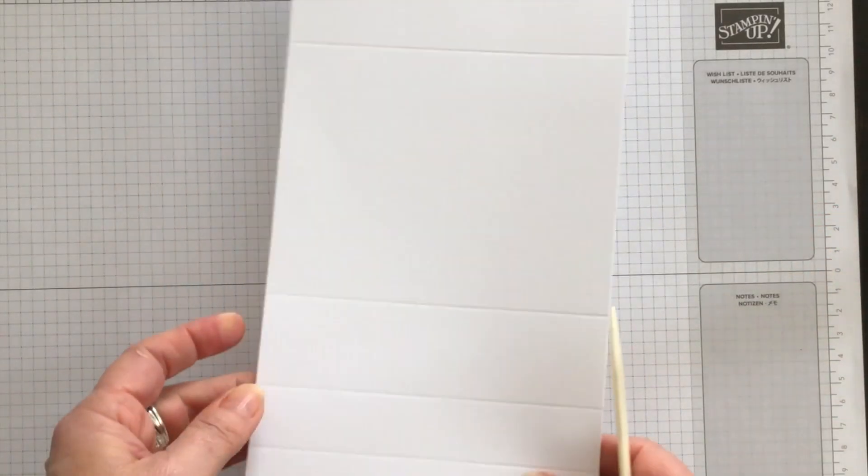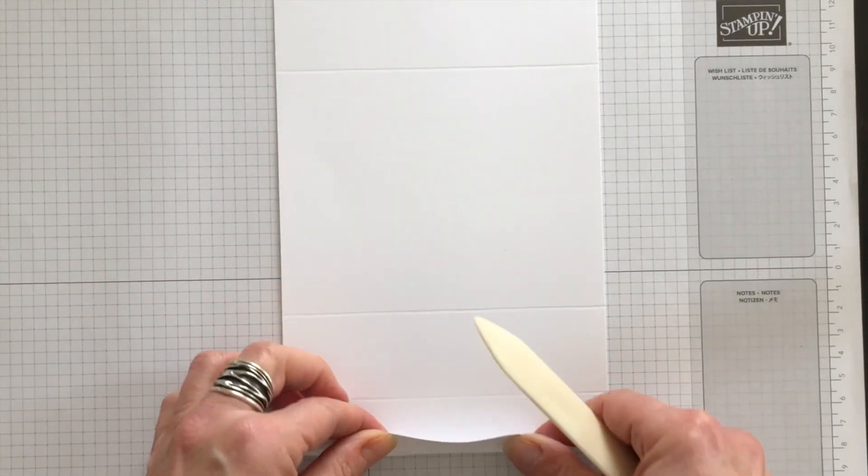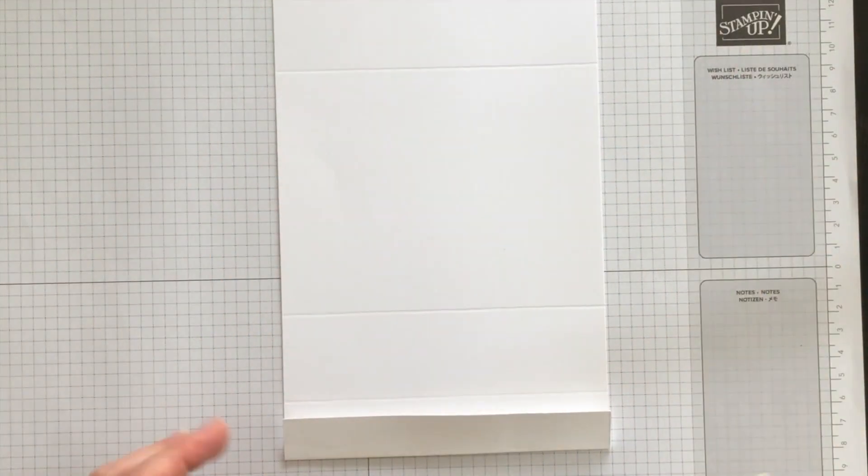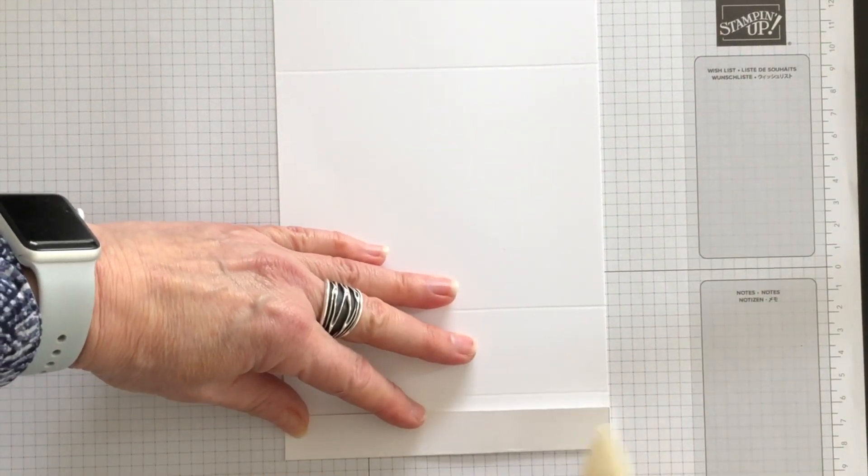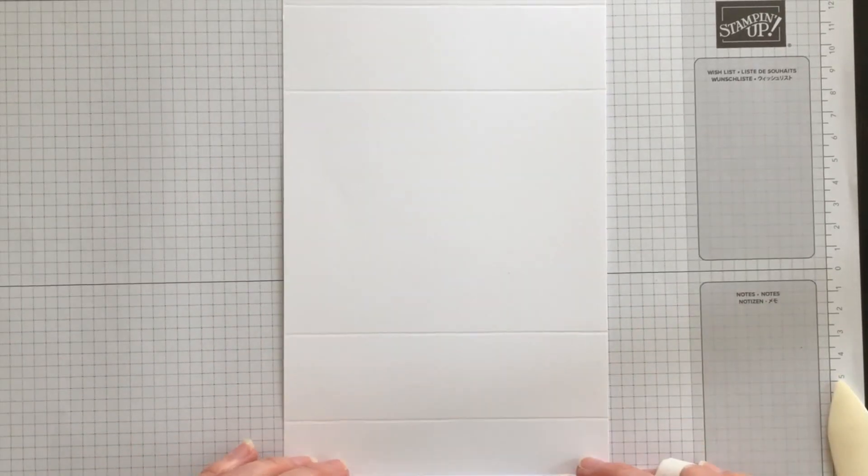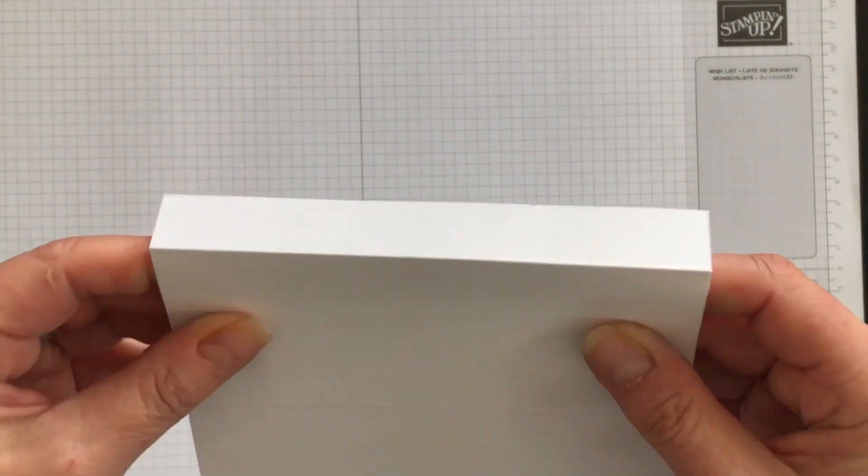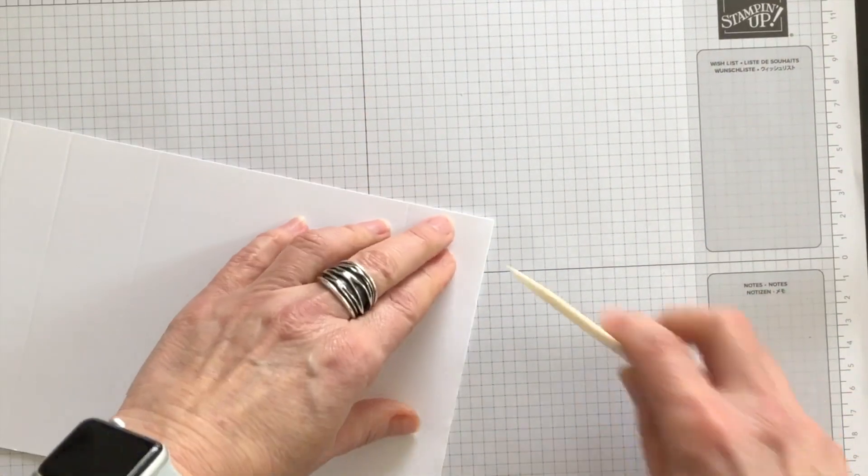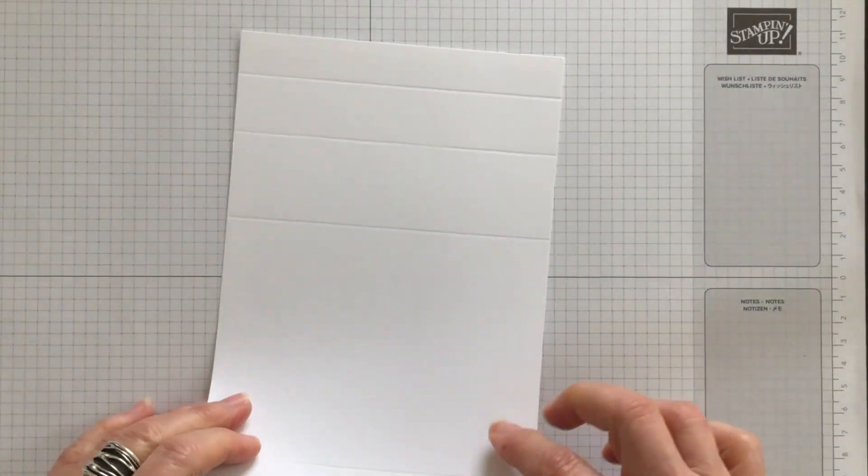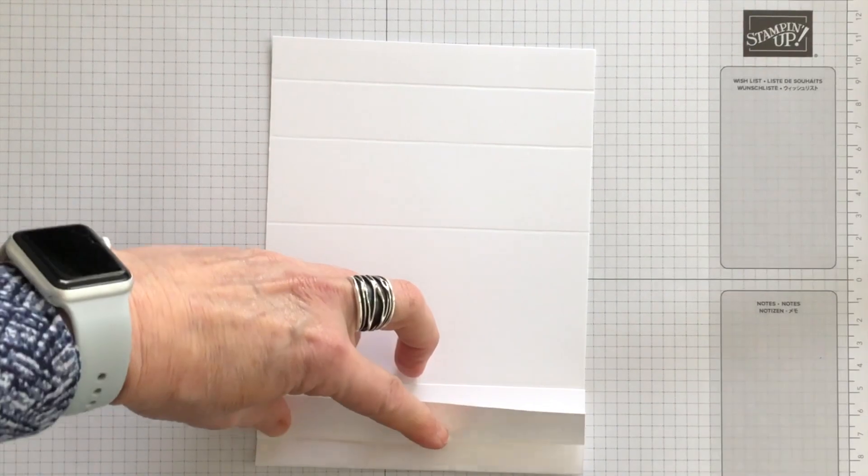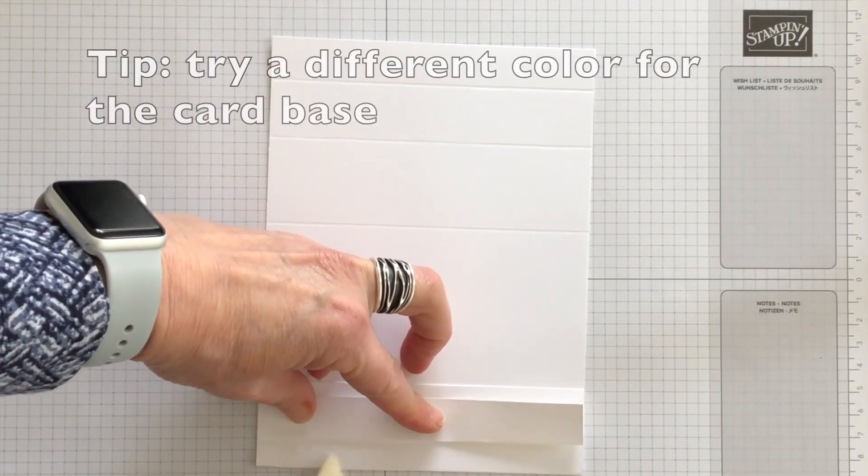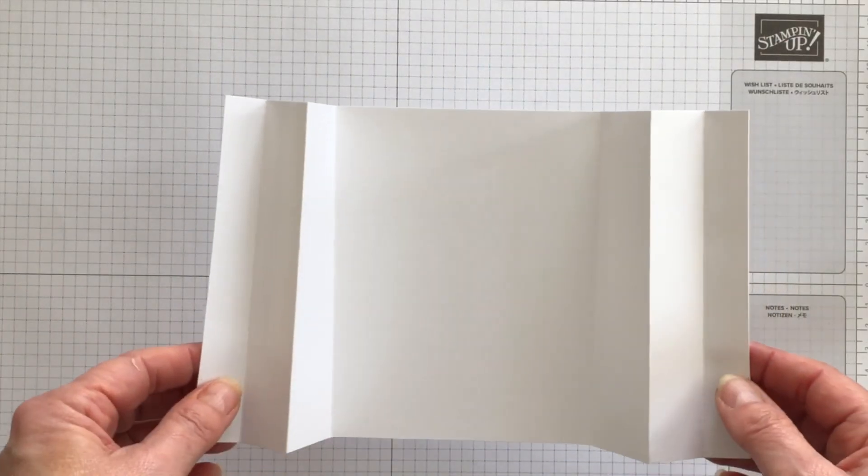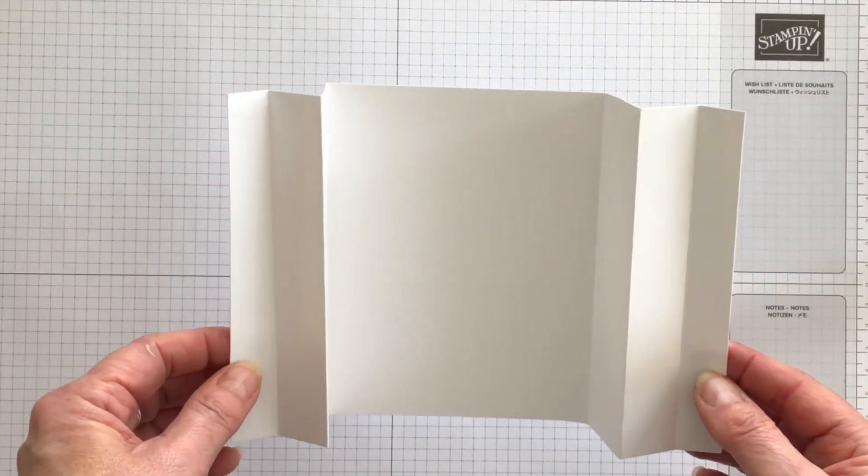It's also handy if you have a bone folder because you want these folds to be nice and crisp. So as you can see, I've turned my card this way and I am going to, for the first fold, fold it in. For the second fold, I'm going to fold it back. And for my third fold, I'm going to fold it in and I'm going to do the same on the other side. And there we go. I have all of the score lines burnished.